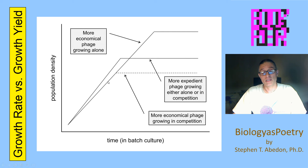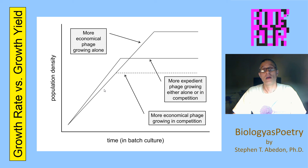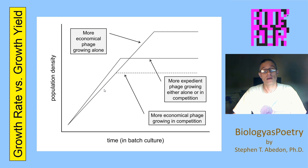So when you've got an expedient and an economical organism and they're growing separately, the economical organism can produce more offspring overall, but when the two organisms are growing in the same environment, the expedient organism can have an advantage over the economical organism as a consequence of it simply being able to reach higher densities faster than the organism that's taking its time but growing more efficiently.